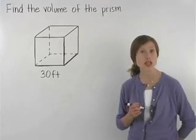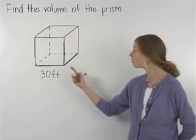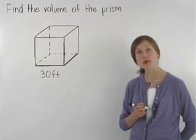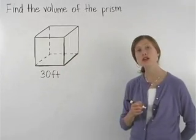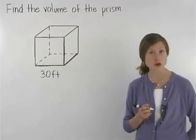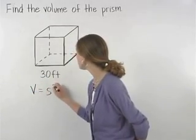Since the length, width, and height of a cube are all equal, we can find the volume of a cube by multiplying side times side times side. So we can find the volume of a cube using the formula volume equals side cubed.